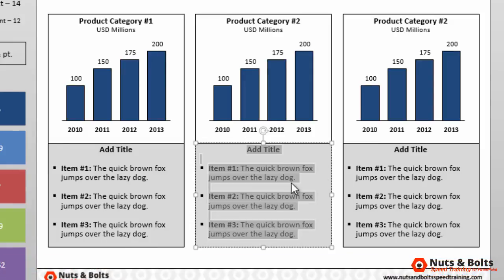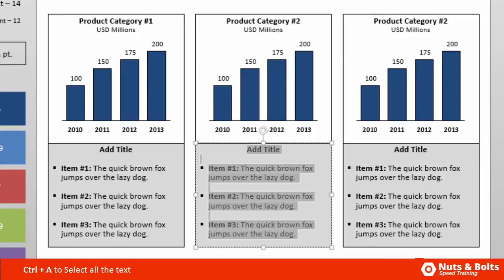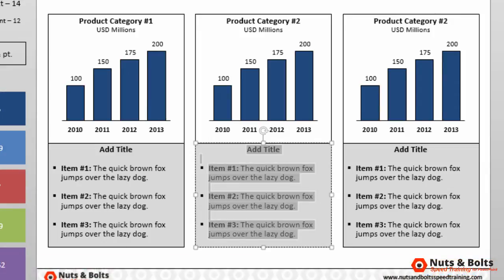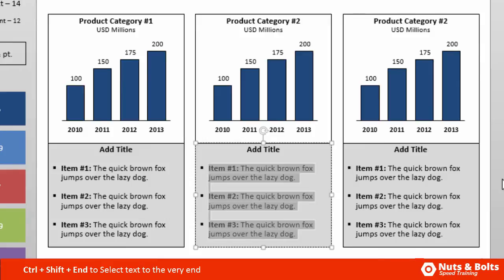This is not nearly as useful for selecting all text as Control+A. If I click into an object and want to select everything, I can hit Control+A to select everything. Where Control+Shift+End is useful is if, for example, your cursor is right before item one and you want to select all items — you can use Control+Shift+End to select items one, two, and three, which you could then copy, paste, delete, et cetera.